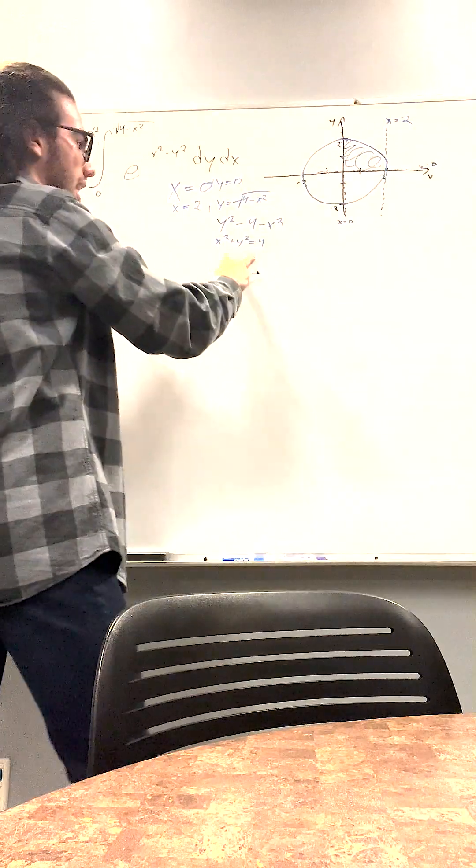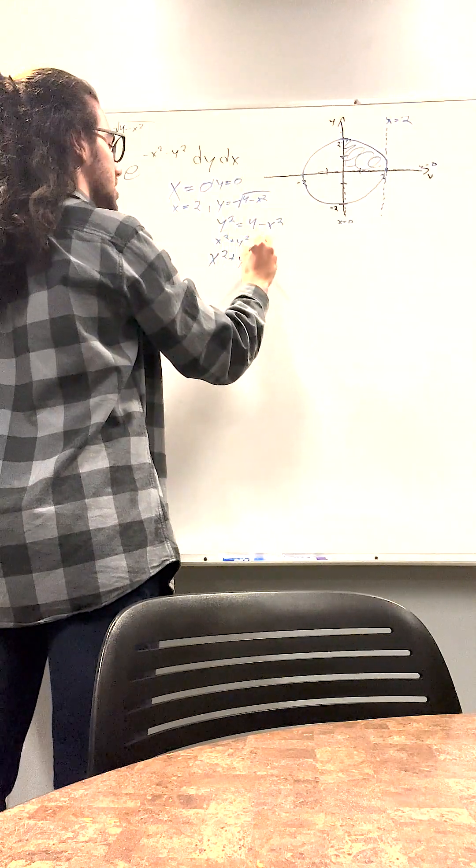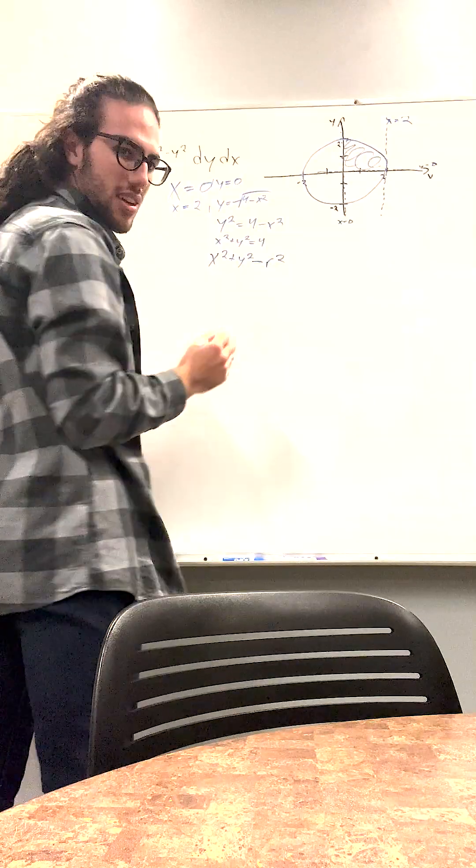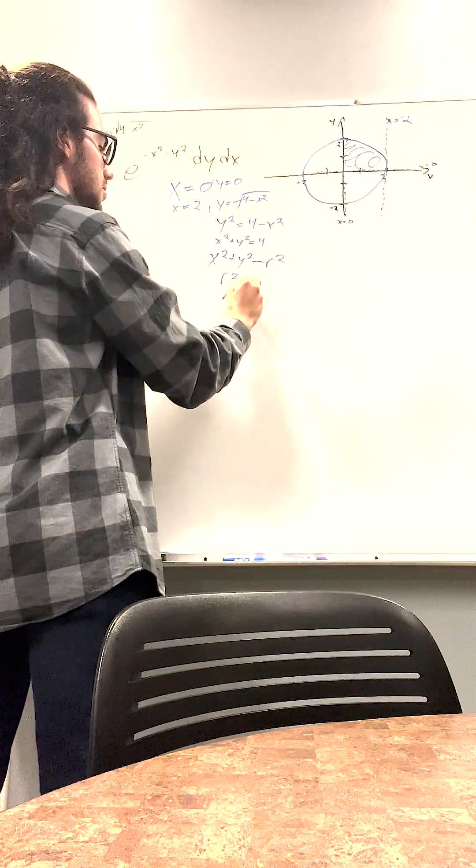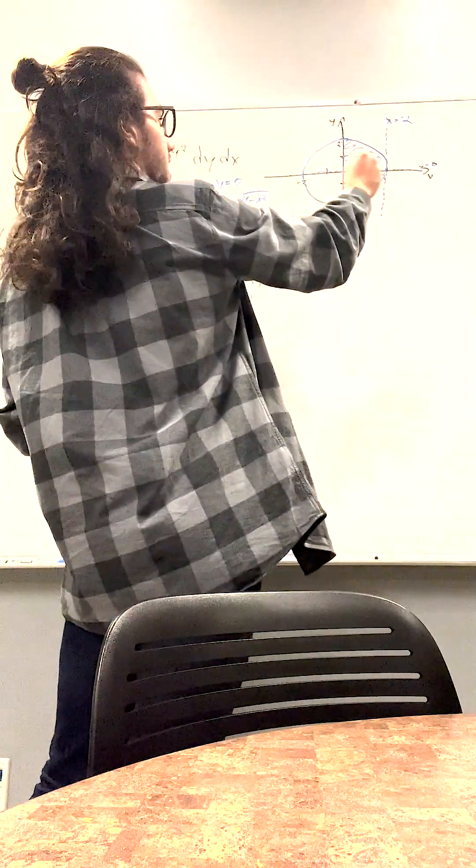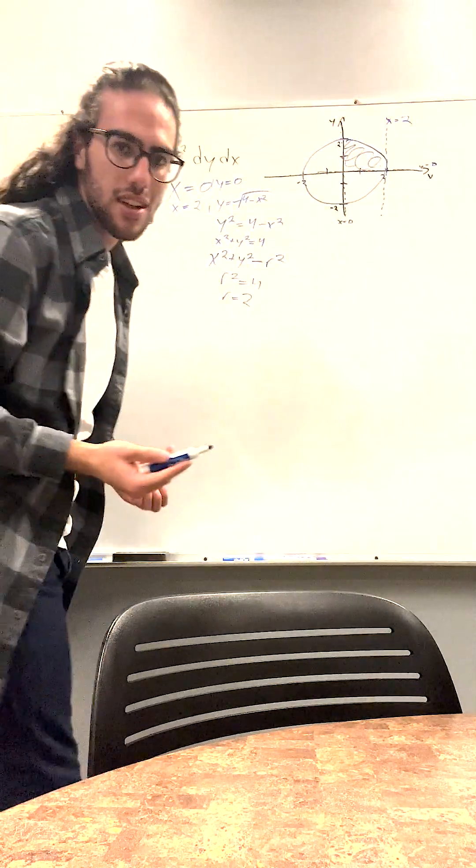So we know that x squared plus y squared is equal to r squared. So here we just substitute it in. r squared is equal to 4 or r is equal to 2. Which corresponds, you see the radius of this is equal to 2. So it makes sense.